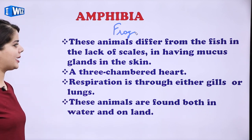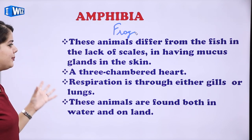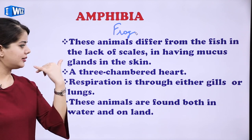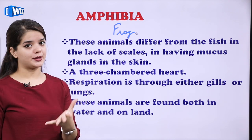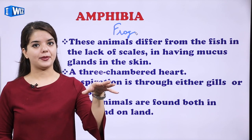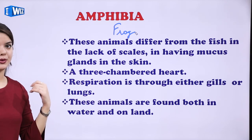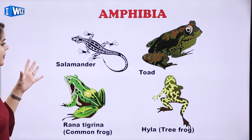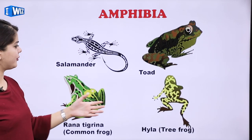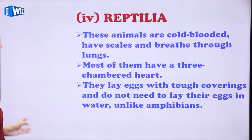Amphibia don't have scales but do have mucus glands and three-chambered hearts. They use either gills or lungs for respiration, and they can live both in water and on land — so they have both gills and lungs for both functions. Examples of Amphibia are toad, tree frog, salamander, and common frog.